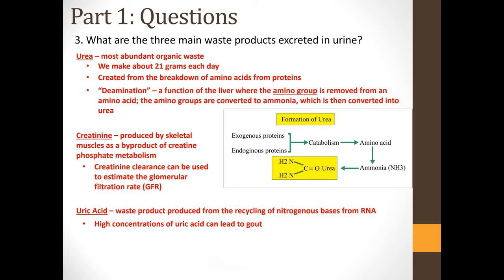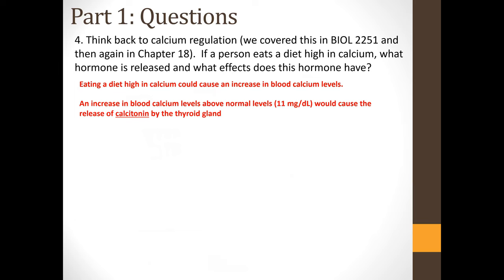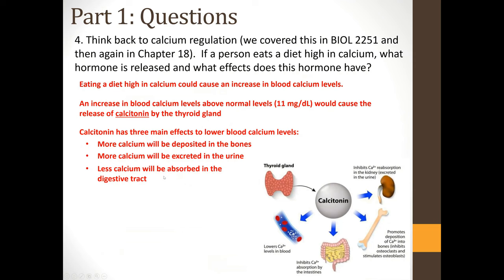Question 4: Think back to calcium regulation. If a person eats a diet high in calcium, what hormone is released and what effects does it have? Eating a high-calcium diet could increase blood calcium levels. An increase above normal — above about 11 mg/dL — causes the release of calcitonin by the thyroid gland. Calcitonin has three main effects to lower blood calcium: more calcium is deposited into bones, more calcium is excreted in the urine, and less calcium is absorbed in the digestive tract, helping to prevent further rises in blood calcium levels.